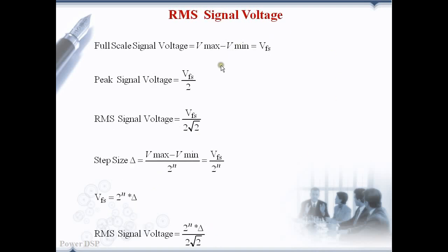Next we try to find the RMS signal voltage. The full scale signal voltage is V maximum minus V minimum and we can denote it as VFS. Then we can find the peak voltage by just dividing it by 2. The RMS value is calculated by dividing the peak signal by root 2. The RMS signal voltage is then VFS by 2 root 2.